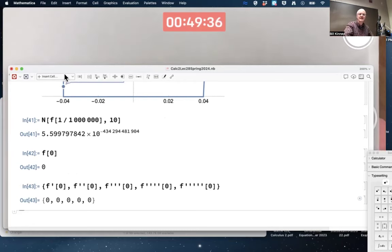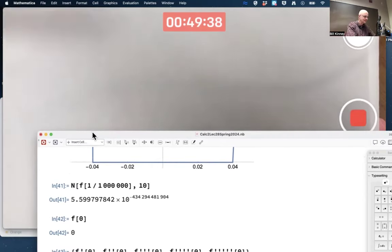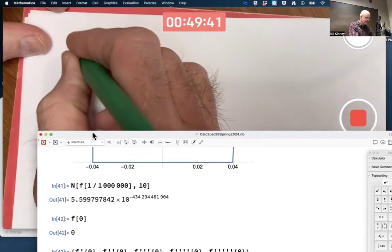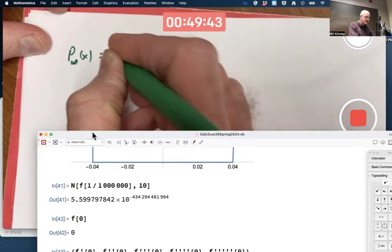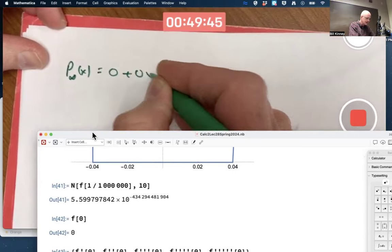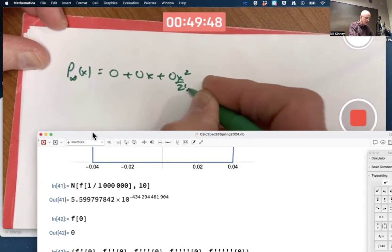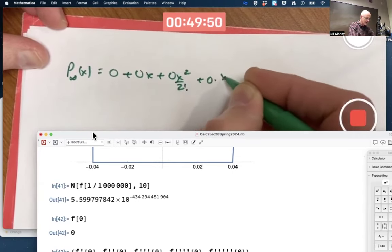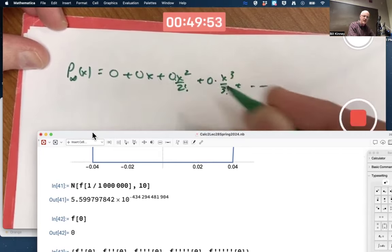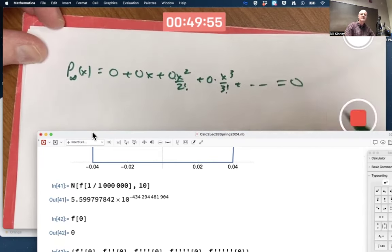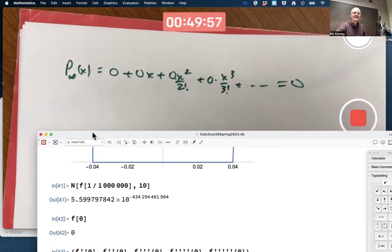And what this means is the Taylor series for this thing, call it p sub infinity of x, is just a bunch of zeros. I'll write over 2 factorial, etc., but all the coefficients are zeros. That's always equal to zero. The Taylor series equals zero exactly for all x, but the function only equals zero when x equals zero. They're not equal except at x equals zero.